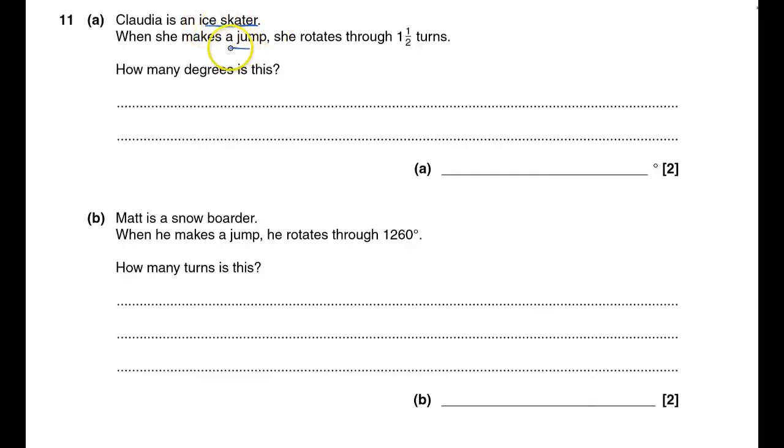Claudia is an ice skater. When she makes a jump, she rotates through one and a half turns. How many degrees is this? You take 360 degrees because that's the number of degrees in one turn and multiply it by one and a half, or 1.5, and that's 540.